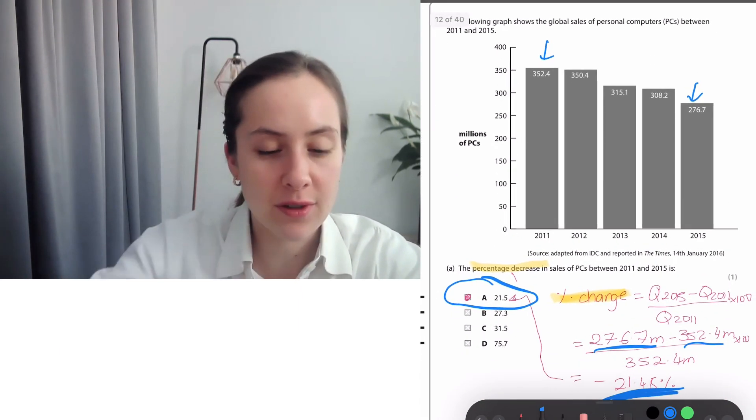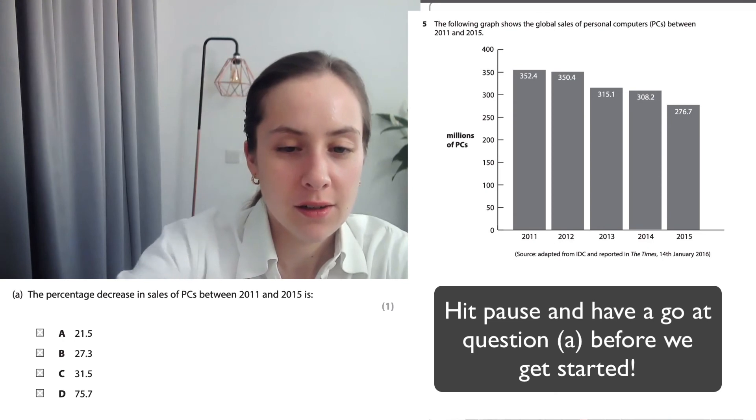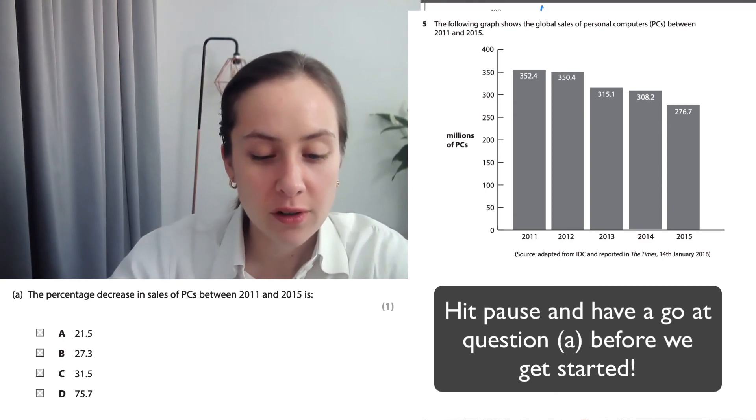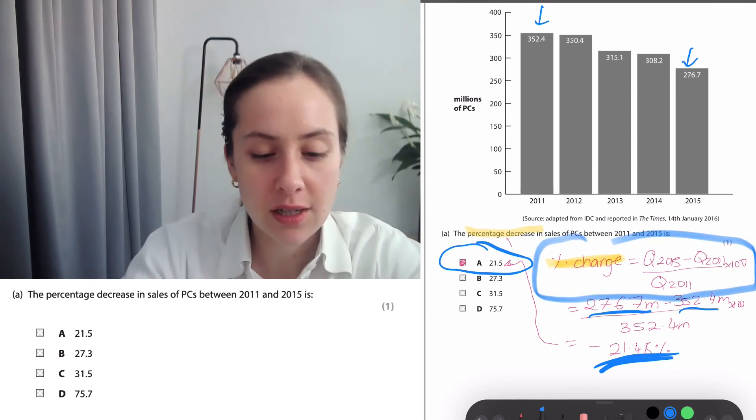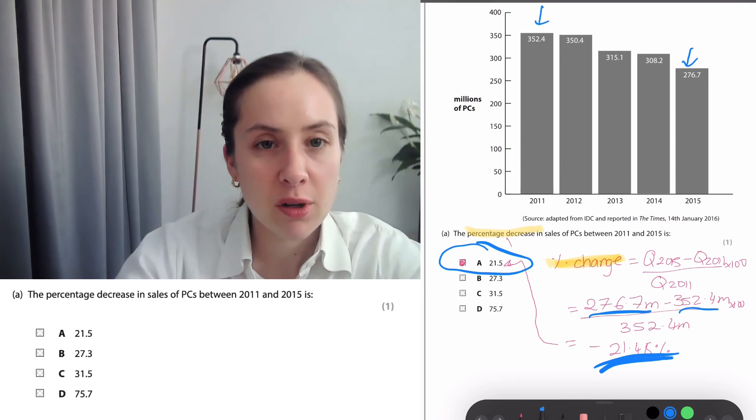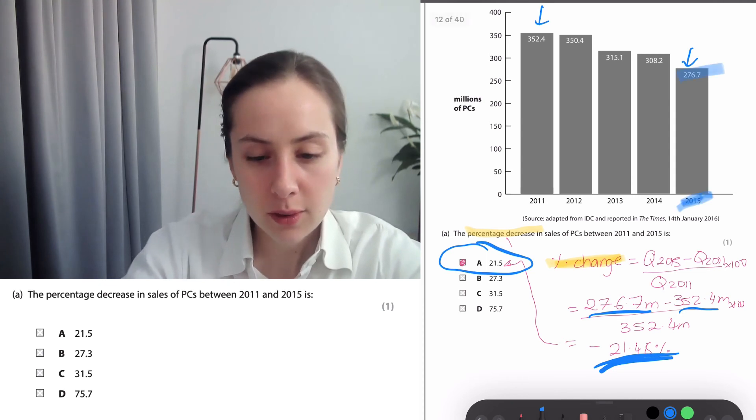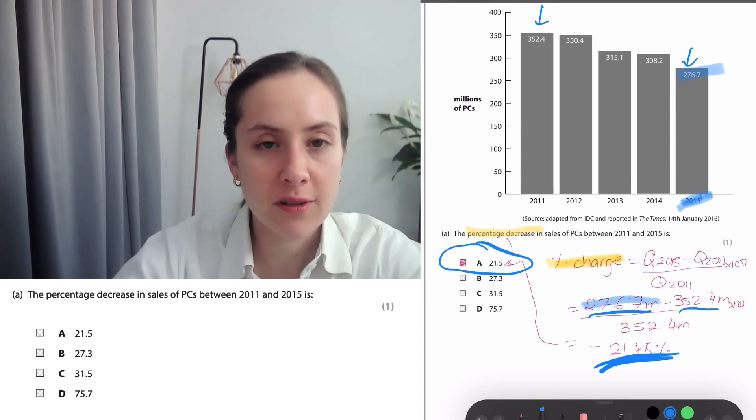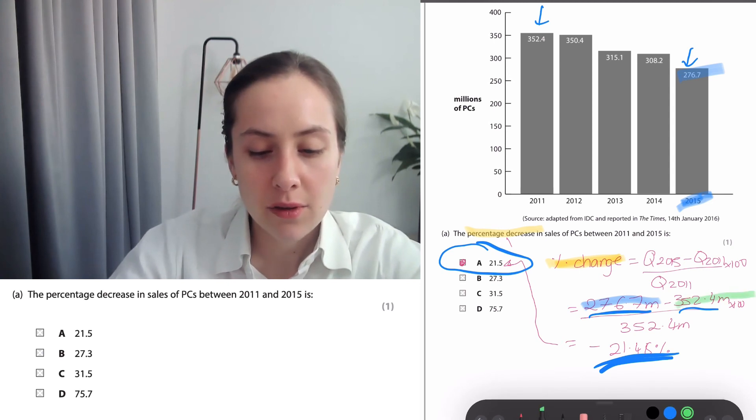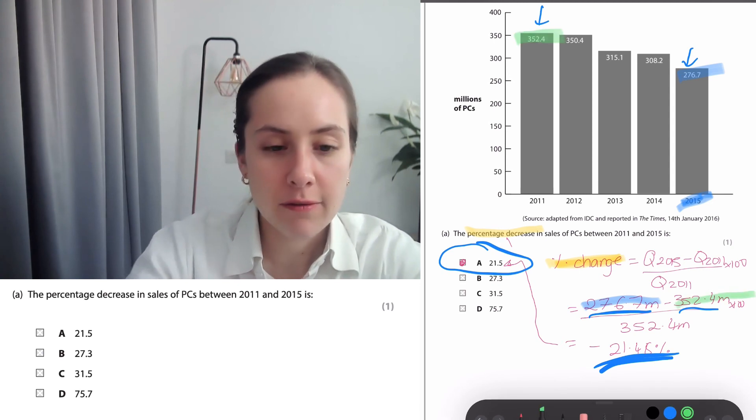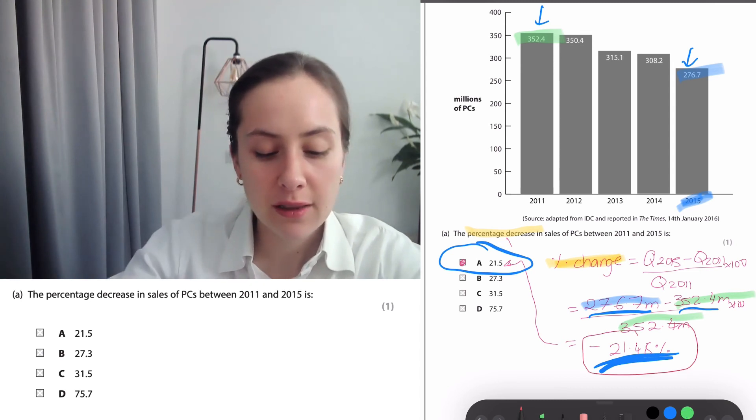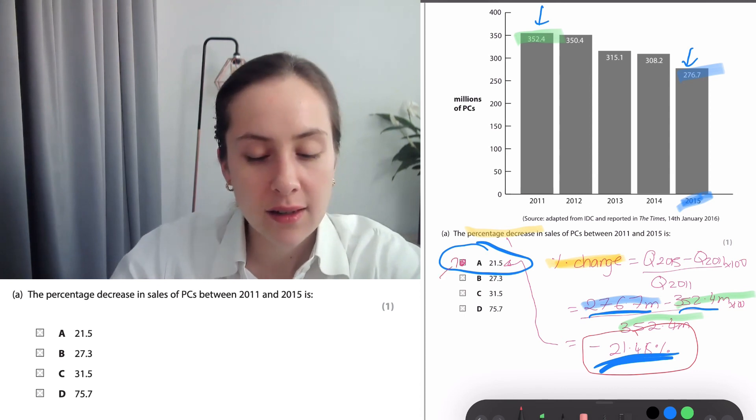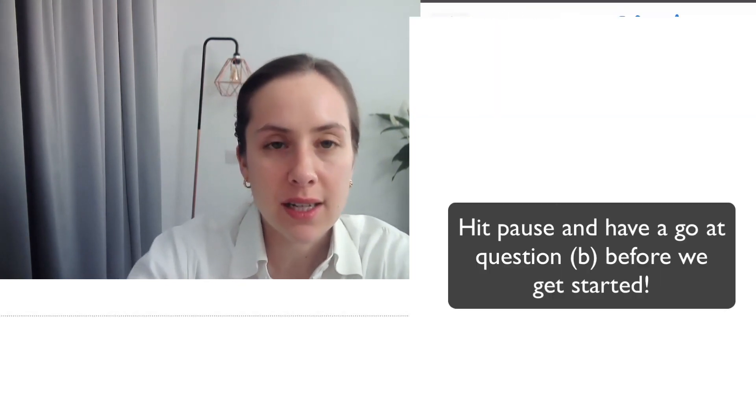Personal computer sales have fallen. We're asked to work out the percentage decrease, so I've got the percentage change equation written here, and you simply have to just plug in the numbers. So plug in the 2015 value of 276, and then the original value of 352.4, divided by the original one, times that by 100, and we get that there has been a decrease of 21.48%, which is approximately 22%.